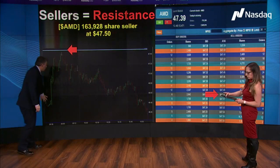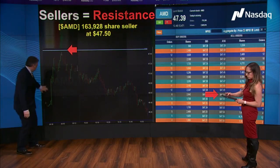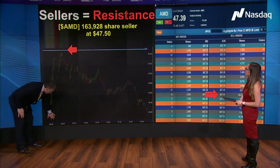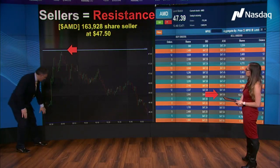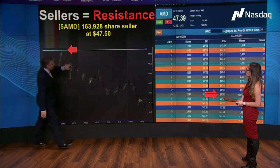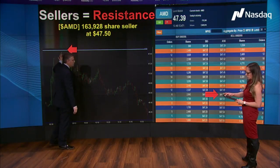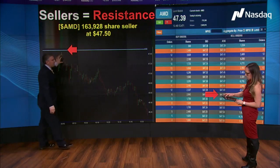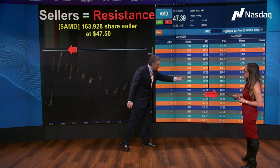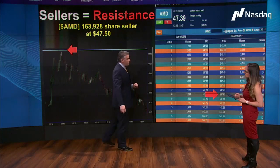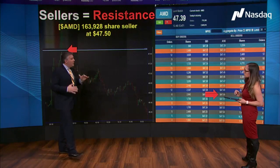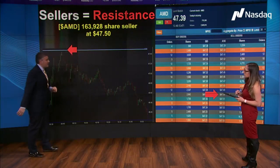On the sell side, same thing. Looking at AMD — the stock had a great trend, goes straight up, hits the resistance levels. As traders, within 10 minutes you see these things take off. But why did it come back down? You can slap every indicator you want on this, but at the end of the day, when you look at Total View and you see 163,000 share sellers out there — 112 orders — that's really what makes that resistance level.